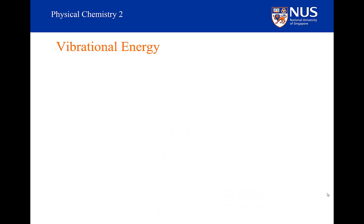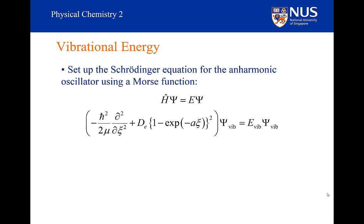We had a wonderfully easy potential term in our Schrödinger equation for the harmonic oscillator: just one half kx squared. Now we have a term with an exponential factor in it, and we have to substitute that into the Schrödinger equation instead. But there is a solution, and indeed it is an analytical solution. One of the reasons Philip Morse developed this potential is precisely because there is an analytical solution for that kind of function in the Schrödinger equation.